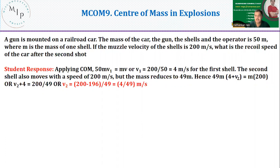So the problem reads like this. A gun is mounted on a railroad car. You have a cart, a chassis. The mass of the car, the gun, the shells, and the operator - there is an operator sitting here, there is a gun here, then there are some shells inside it. Now together all of them, the mass totally is 50M.